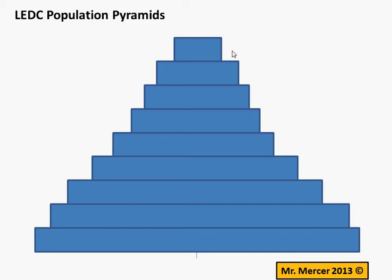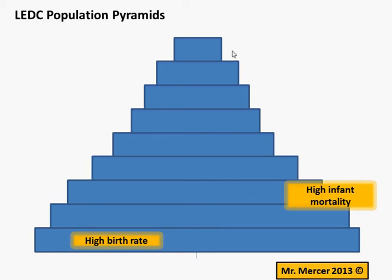There are various descriptions we can make. A high birth rate — the wide bottom shows a high birth rate. There's your first description. There's also a high infant mortality rate. We know this because the first line here, the most recent generation of children, drops quite dramatically off into the next generation of children, showing that something must have happened to a large number of children.